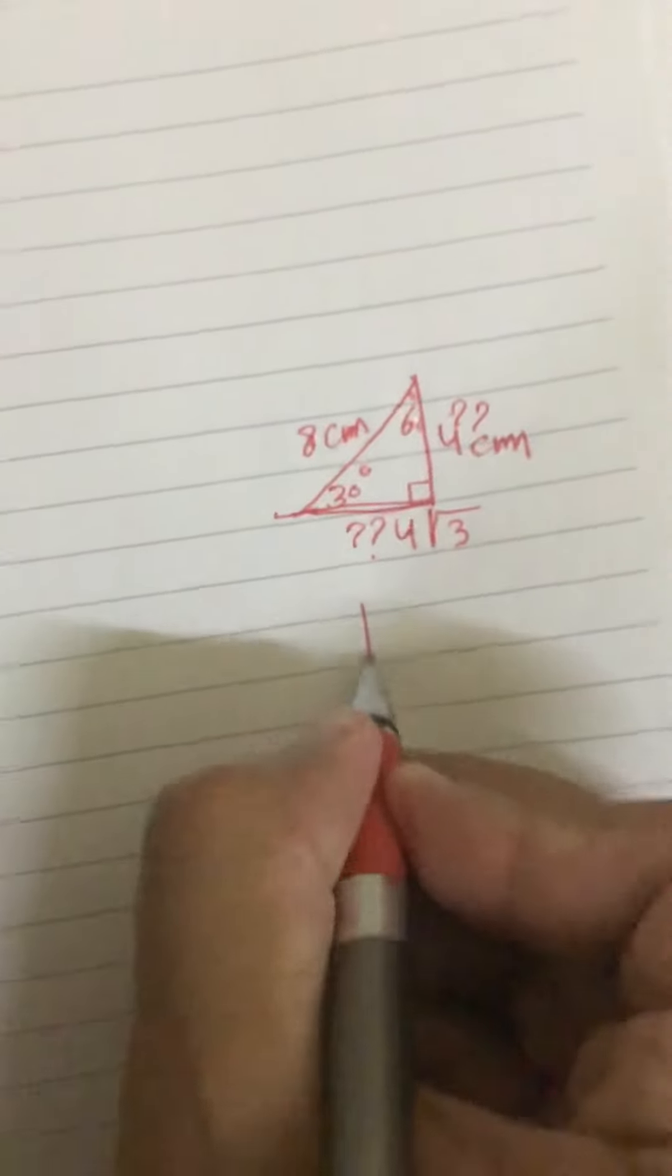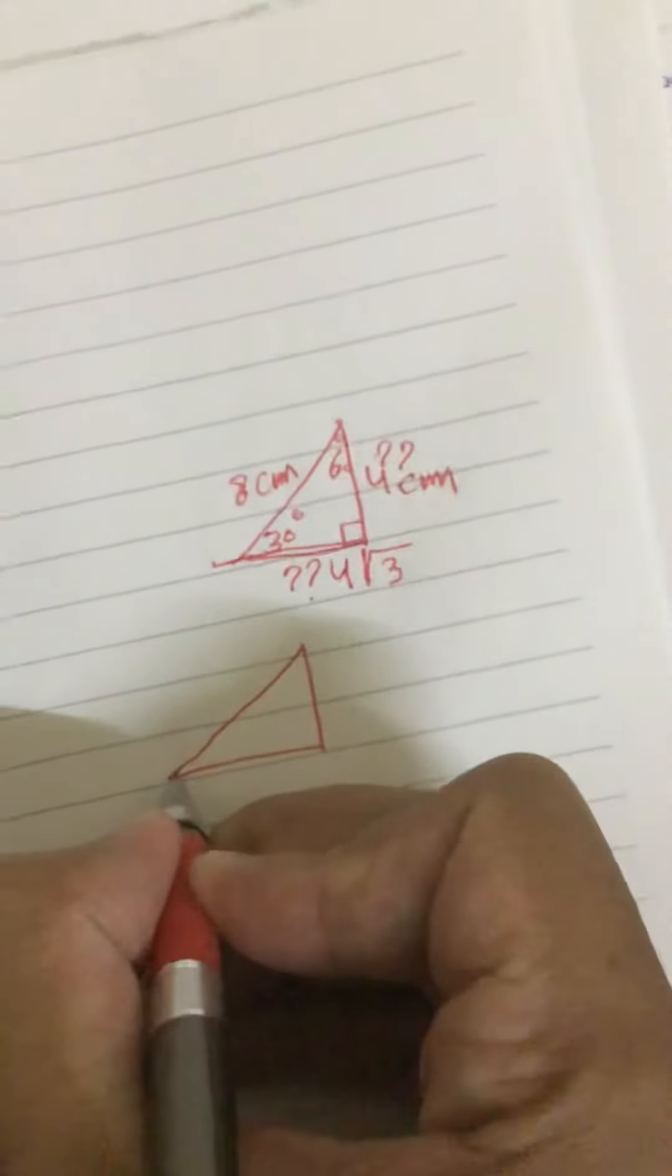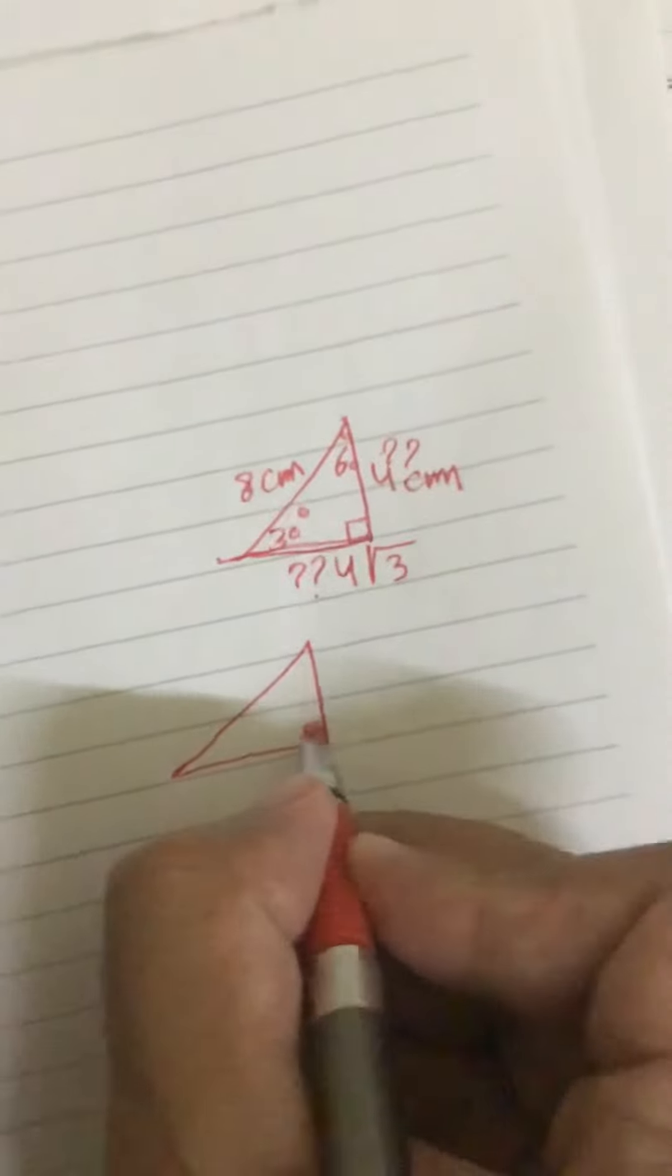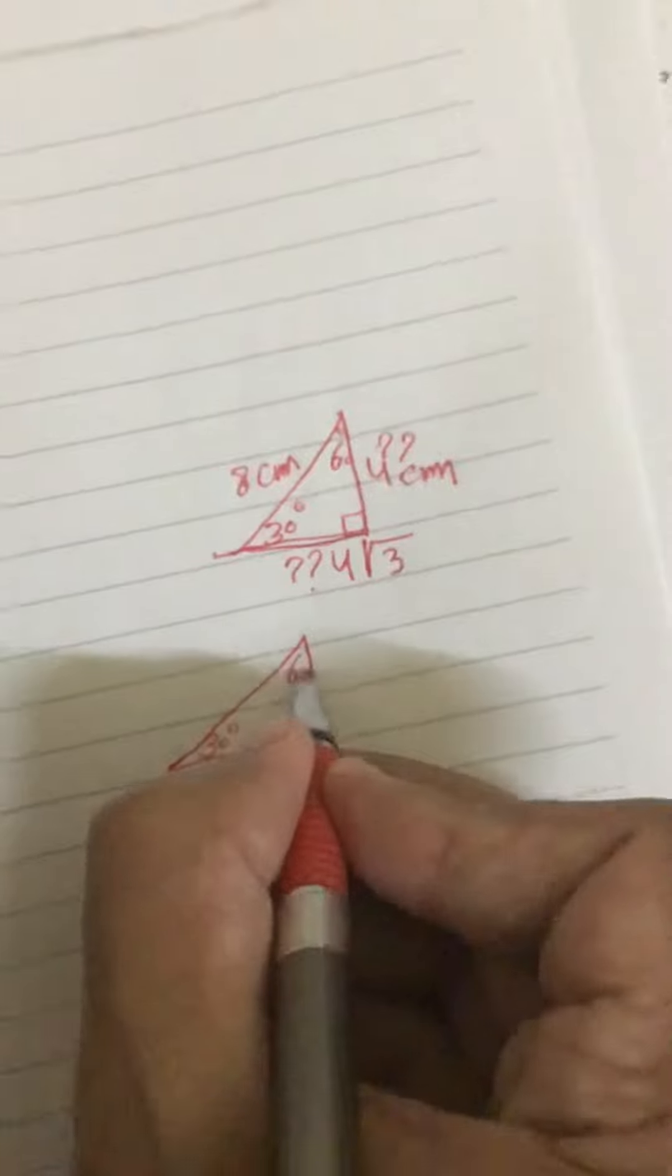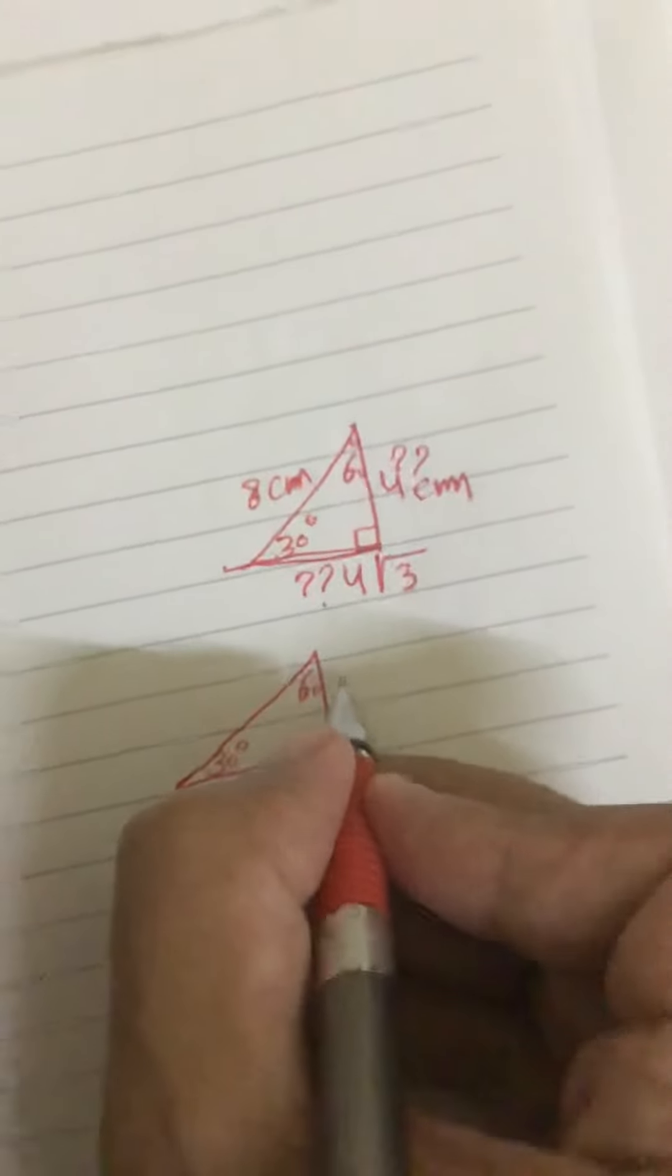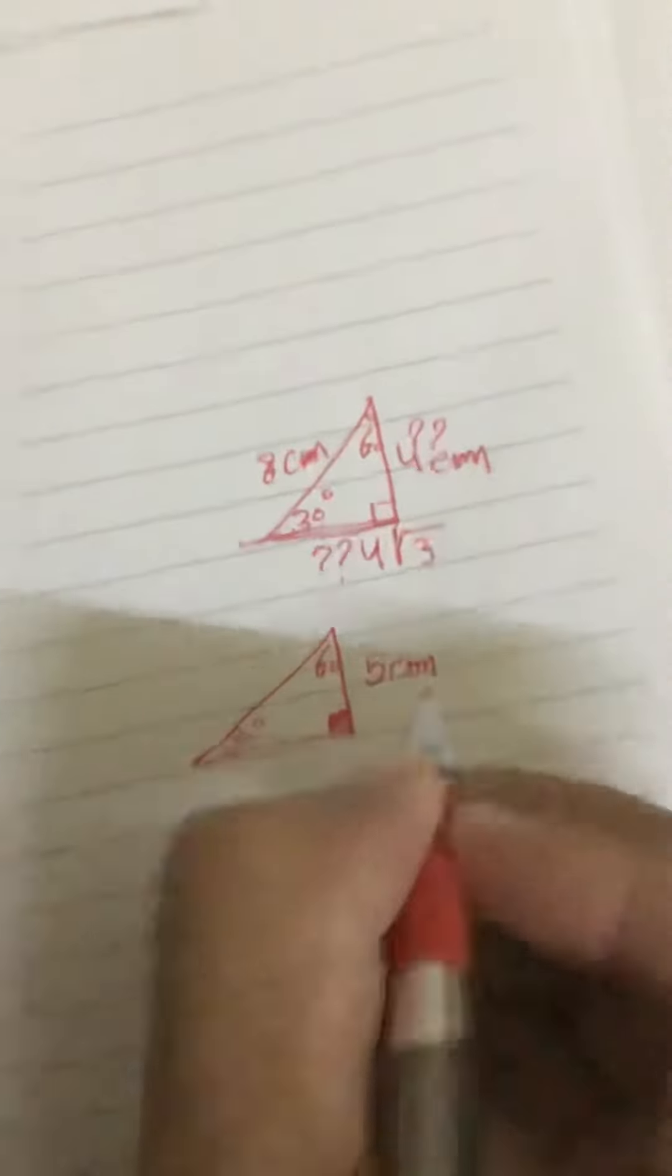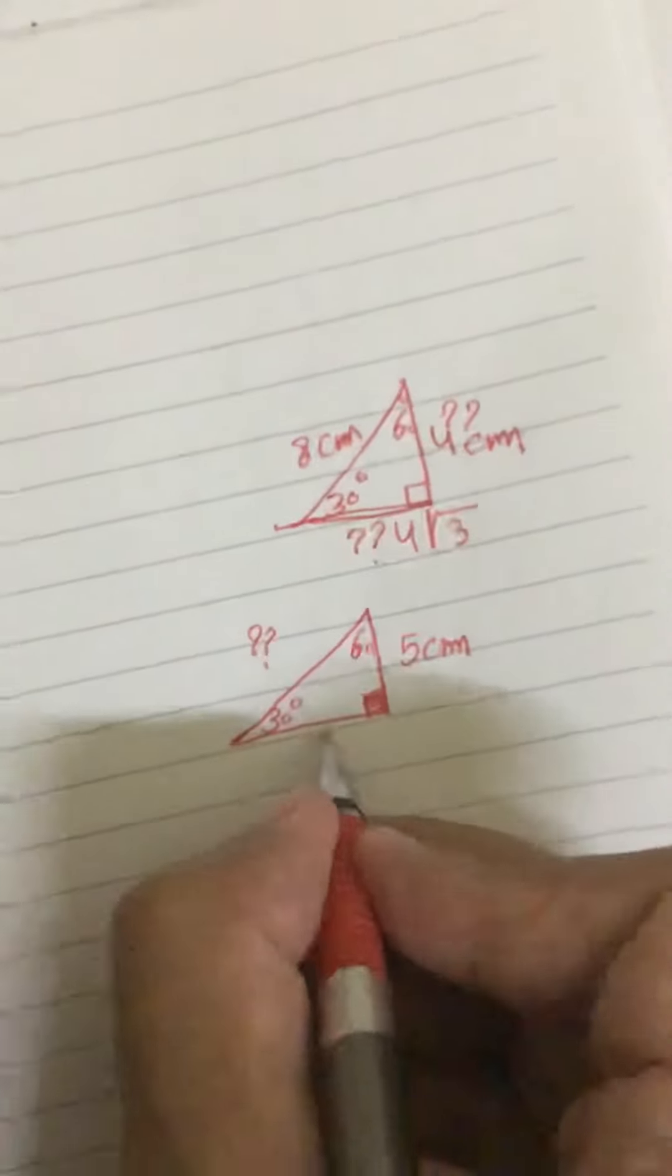For example, if you have right triangle. This one 90 degree, this one 30, this one 60. If he gave you this side, it will be five centimeter. What about this side? And this side.